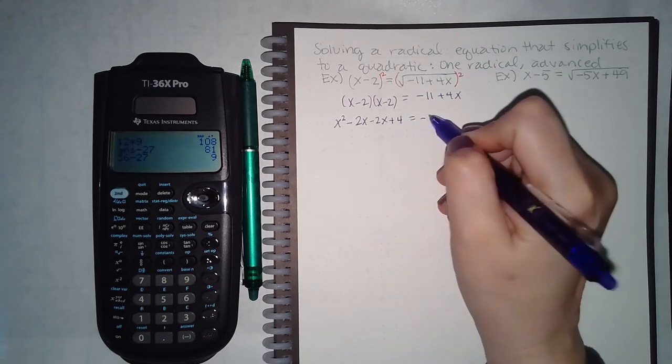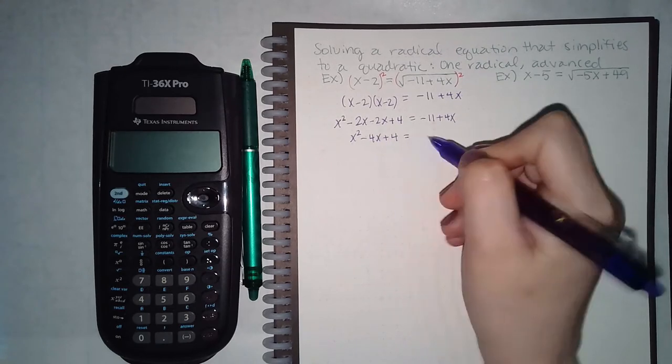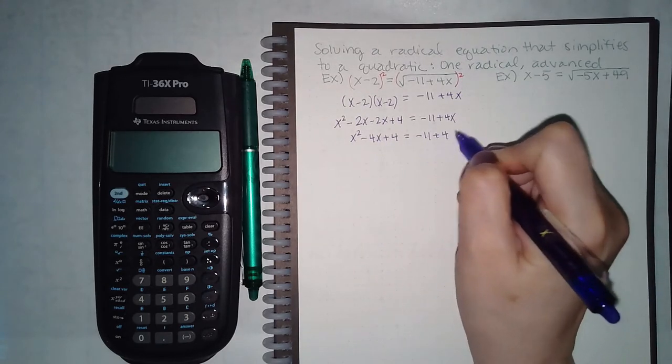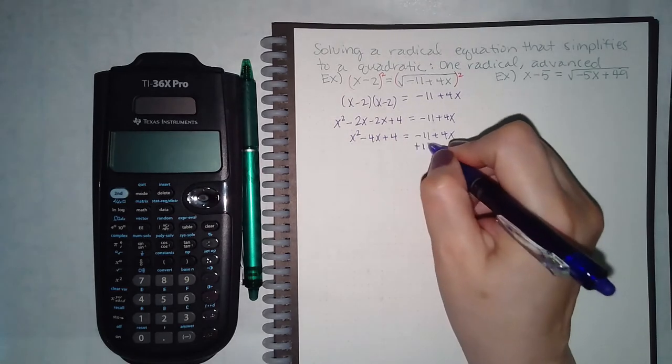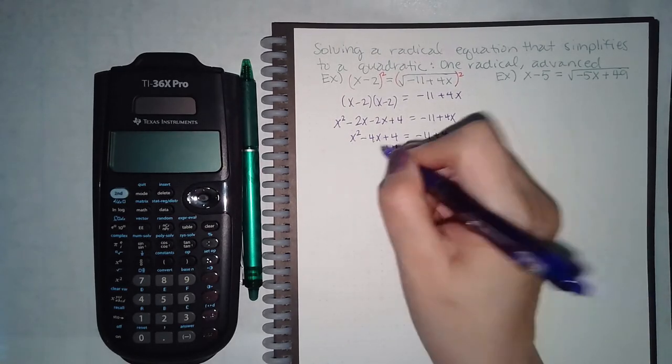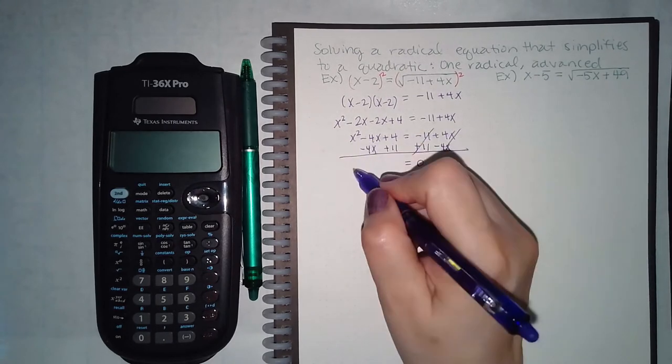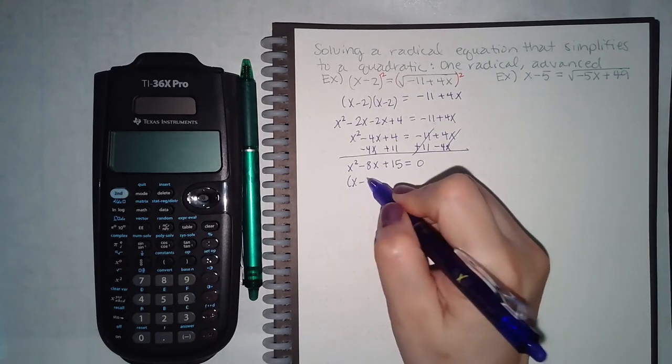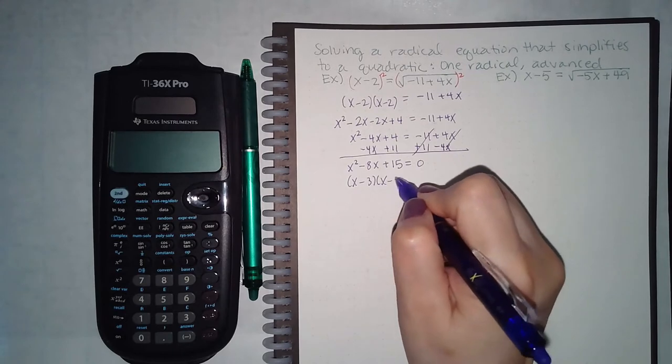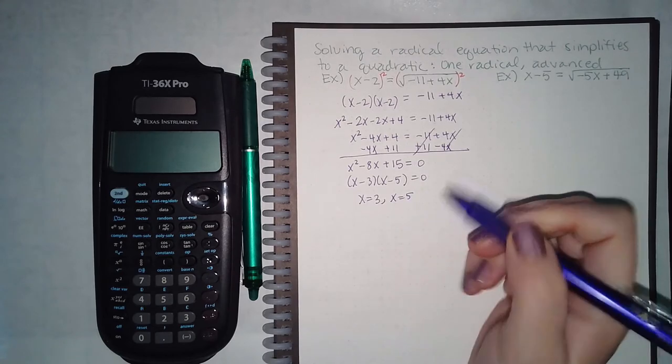Once that left hand side is simplified, I notice that there's a square here, so I will have to move all my terms over to one side. So this will become x squared minus 8x plus 15, and I can factor that. So I get x equals 3 and x equals 5.